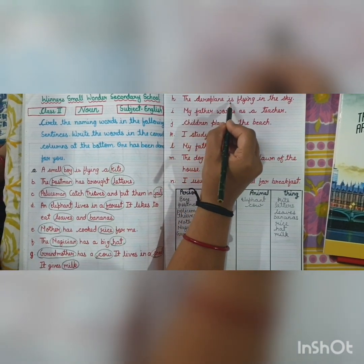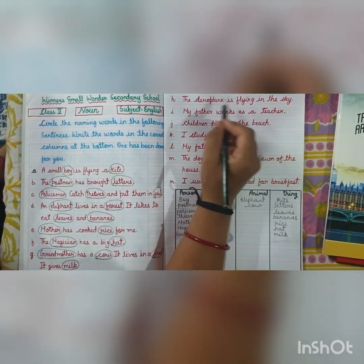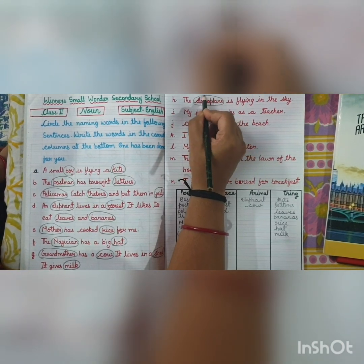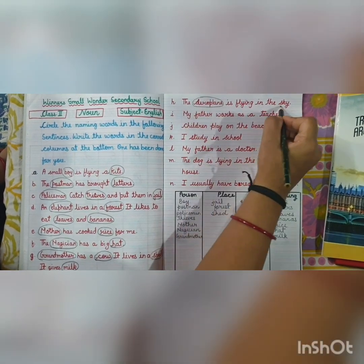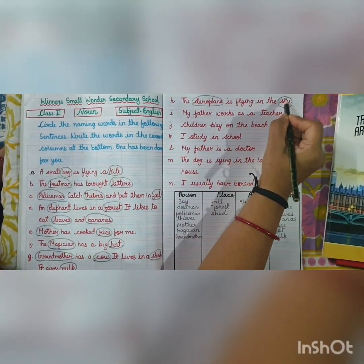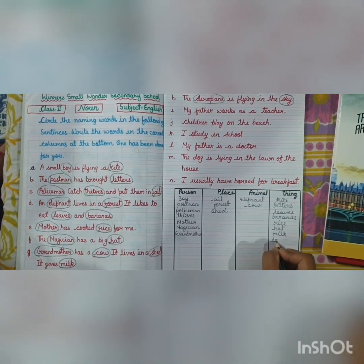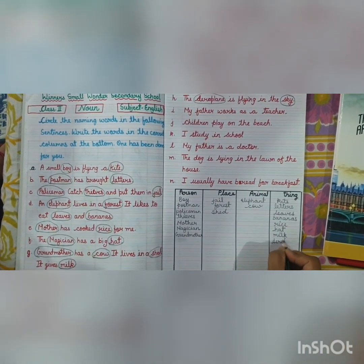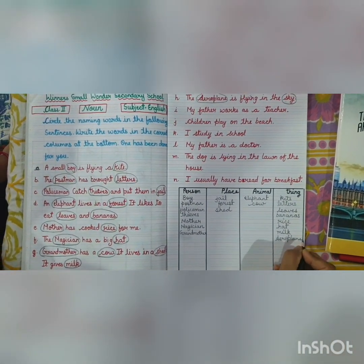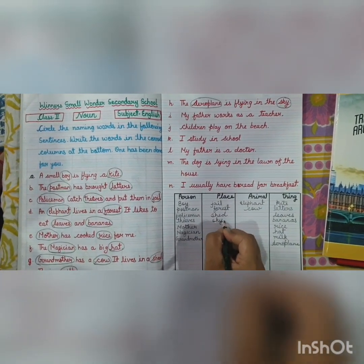The aeroplane is flying in the sky. Aeroplane is a thing, and sky is a place. We write aeroplane in the things column and sky in the place column.